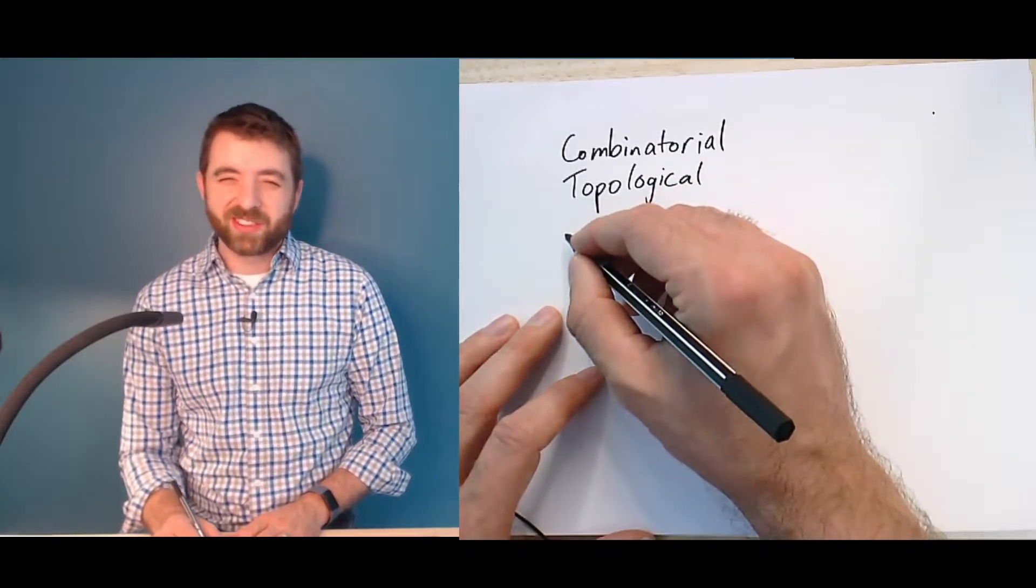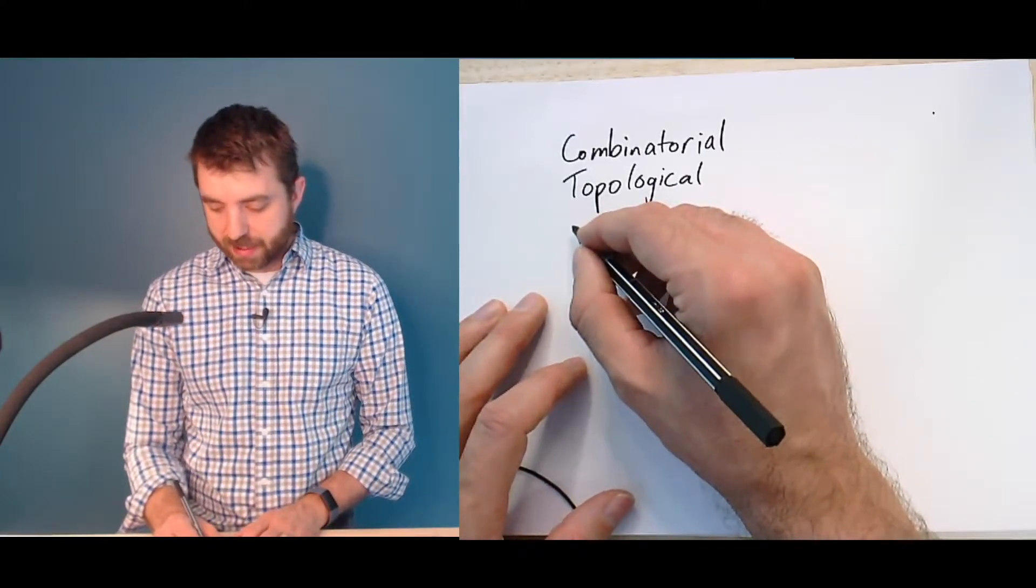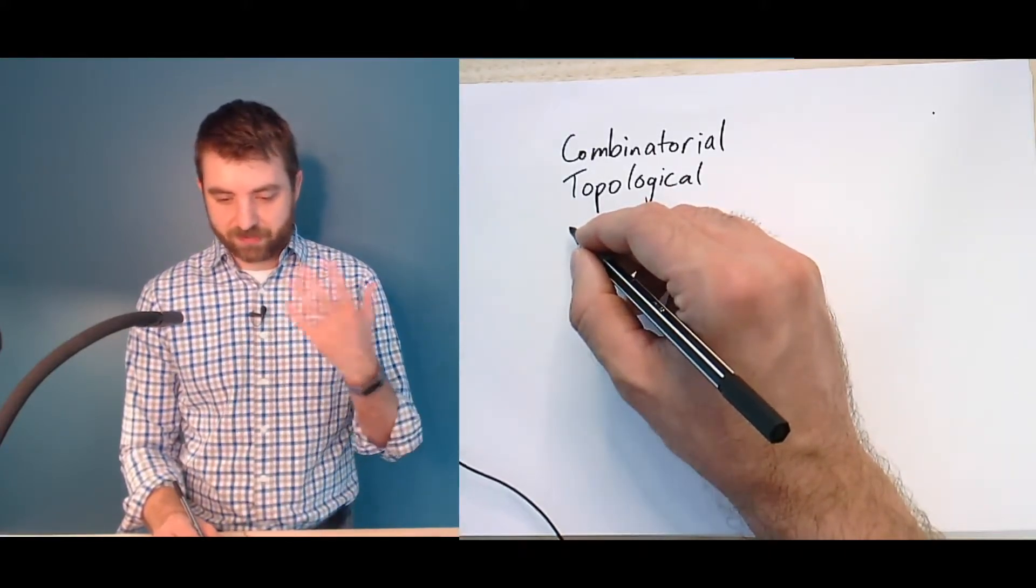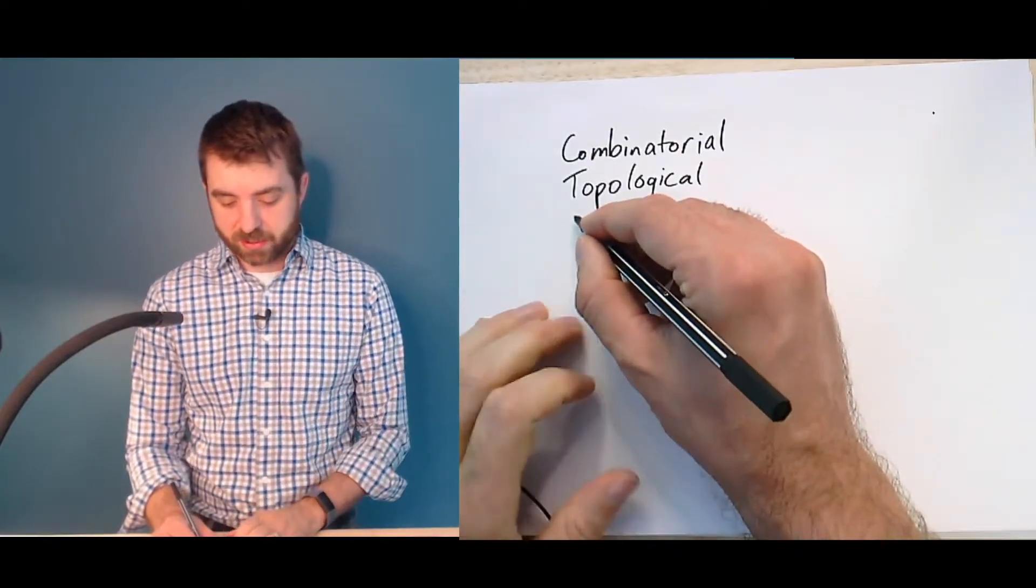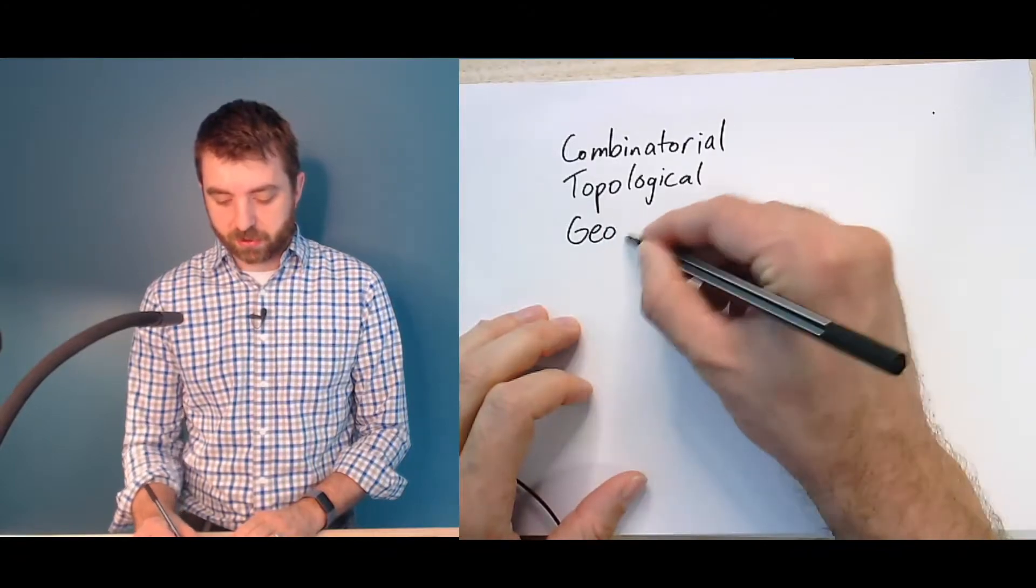Now, once you start talking about things in 2D and 3D, it's natural to think of them not just as sets, but as having some other structure like having, say, straight edges. And that's where you get into the geometric perspective.